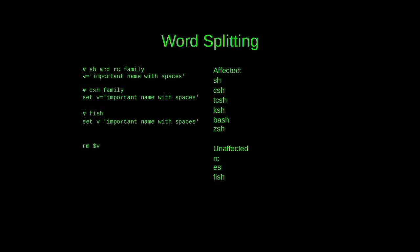There's word splitting, which anyone with a passing familiarity with the Unix shell has experienced. This is a consequence of shells not having lists — lists get simulated with word splitting, reparsing things and treating them as lists when convenient. But sometimes it's inconvenient. If you set up a variable like 'important name with spaces', you might expect to remove a file named that, but instead it will try to remove 'important', 'name', 'with', and 'spaces' separately. RC, ES shell, and fish have turned off that behavior.